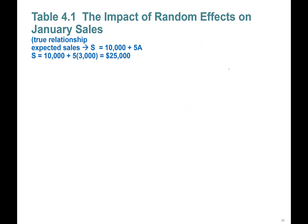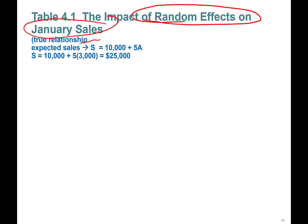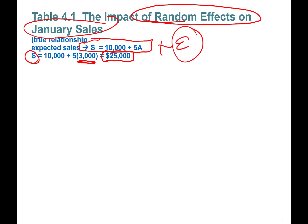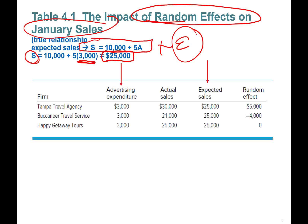Let's look at the effect of random shocks on January sales. The true model says if I spend three thousand dollars, it should generate twenty-five thousand dollars of sales. However, random shocks can happen. Looking at three different travel agencies: Tampa Travel Agency spent three thousand dollars, Buccaneer Travel Service spent three thousand dollars, and Happy Getaway Tours also spent three thousand dollars.